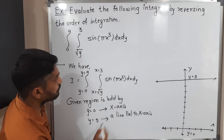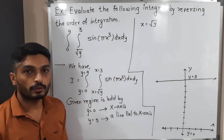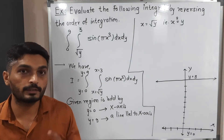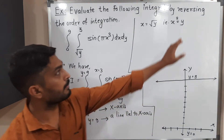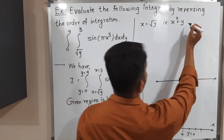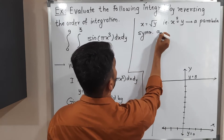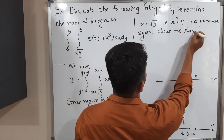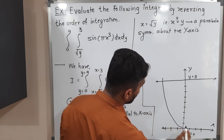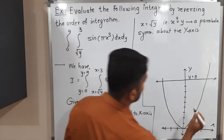Next, x = √y. To remove the square root, I square both sides: x² = y. The power of x is 2 and the power of y is 1, which means it represents a parabola symmetric about the positive y-axis, opening in the direction of the positive y-axis. Here is a rough sketch of that parabola, and I label it y = x².